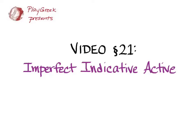This video goes with section 21 of Hanson and Quinn's Greek Unintensive Course and covers the imperfect indicative active of thematic verbs that end in omega. You can refer to Hanson and Quinn on this subject on pages 46 and 47 or in the appendix on page 652.